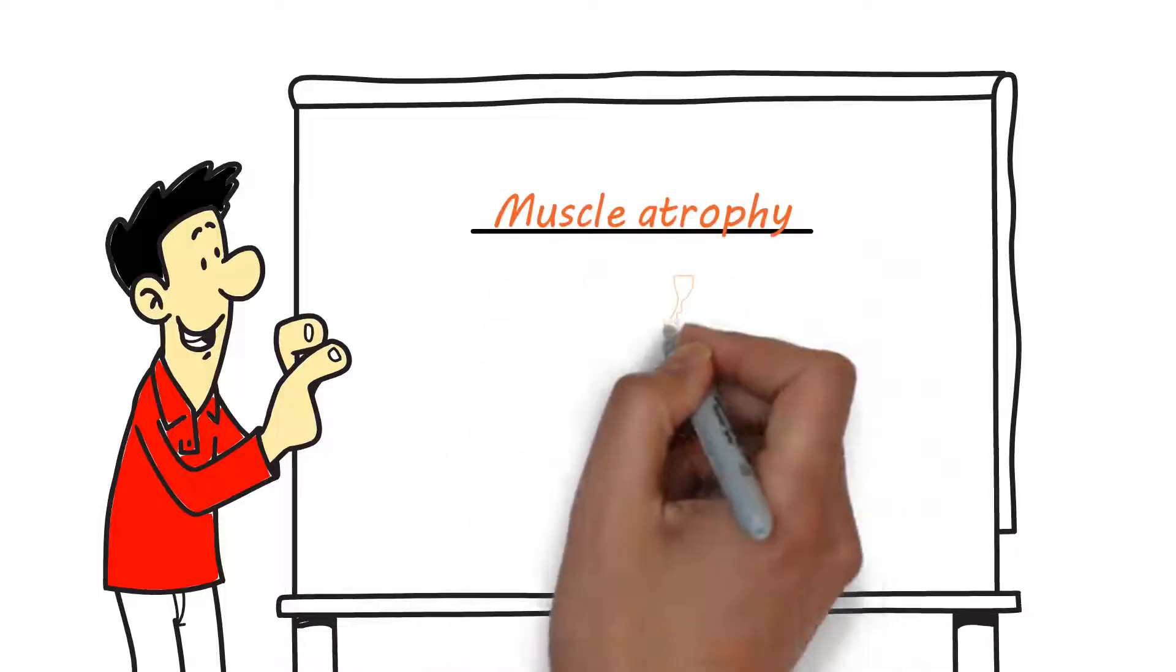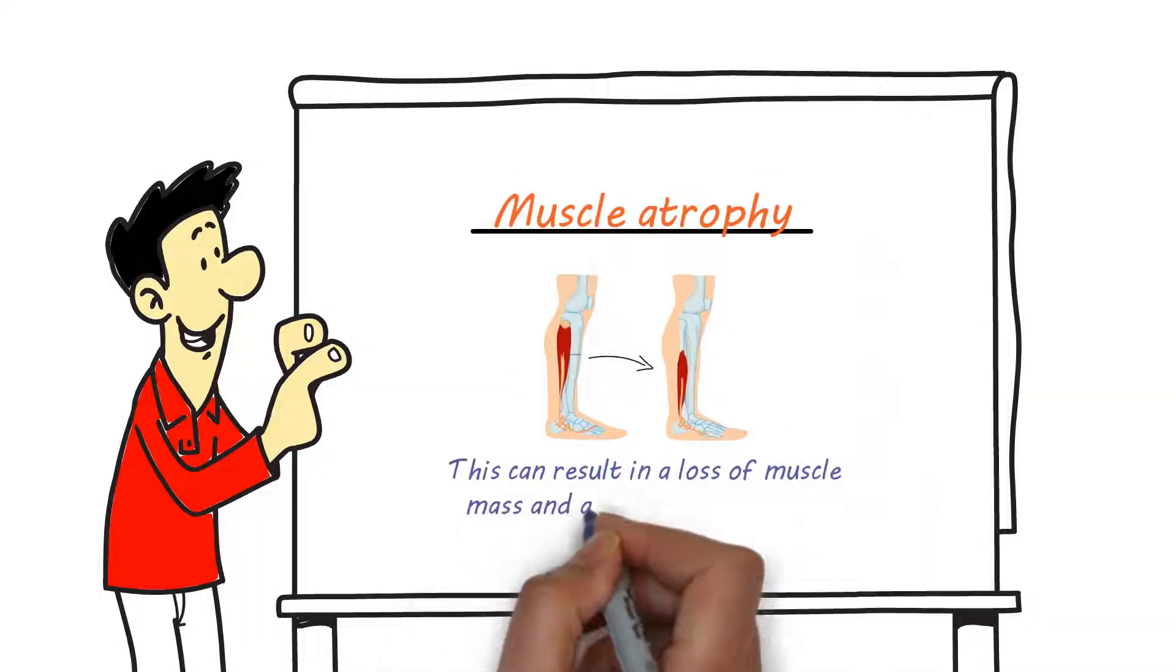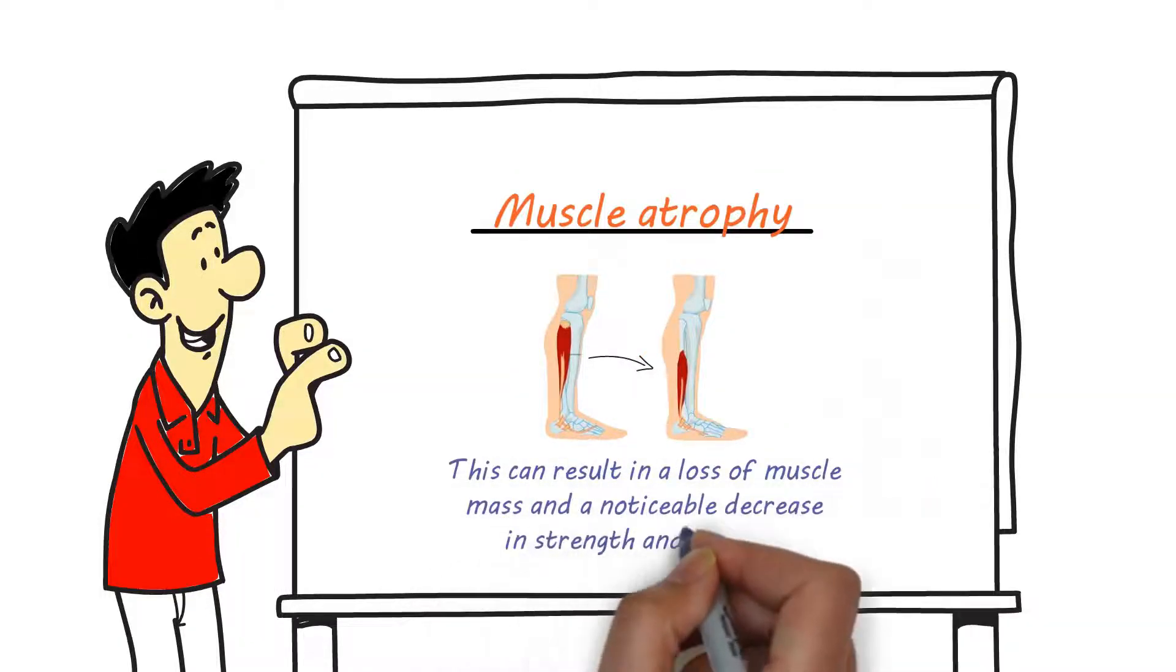Muscle atrophy. As the disease progresses, muscle atrophy, or shrinkage, may occur. This can result in a loss of muscle mass and a noticeable decrease in strength and mobility.